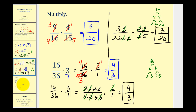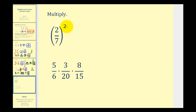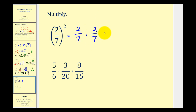Let's take a look at two more examples. Here we have two-sevenths squared. If something is squared, that means we have two factors of the base, so we have two-sevenths times two-sevenths. Since both two and seven are prime, we can just multiply the numerators and denominators. Two times two is equal to four, and seven times seven is equal to forty-nine.